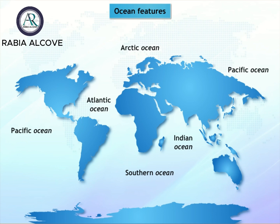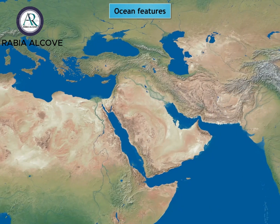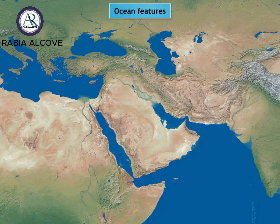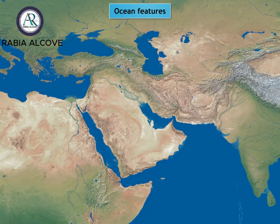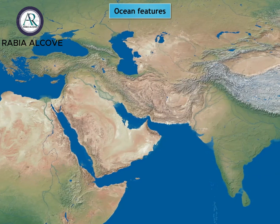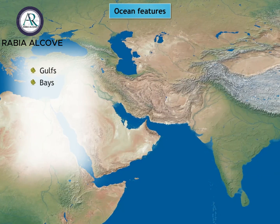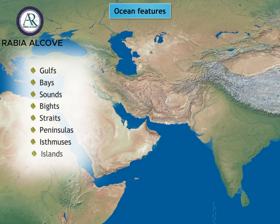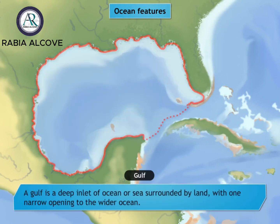Let's learn about the various features of an ocean. Oceans contain many features that are formed where water and land meet. These include gulfs, bays, sounds, bights, straits, peninsulas, isthmuses, and islands.